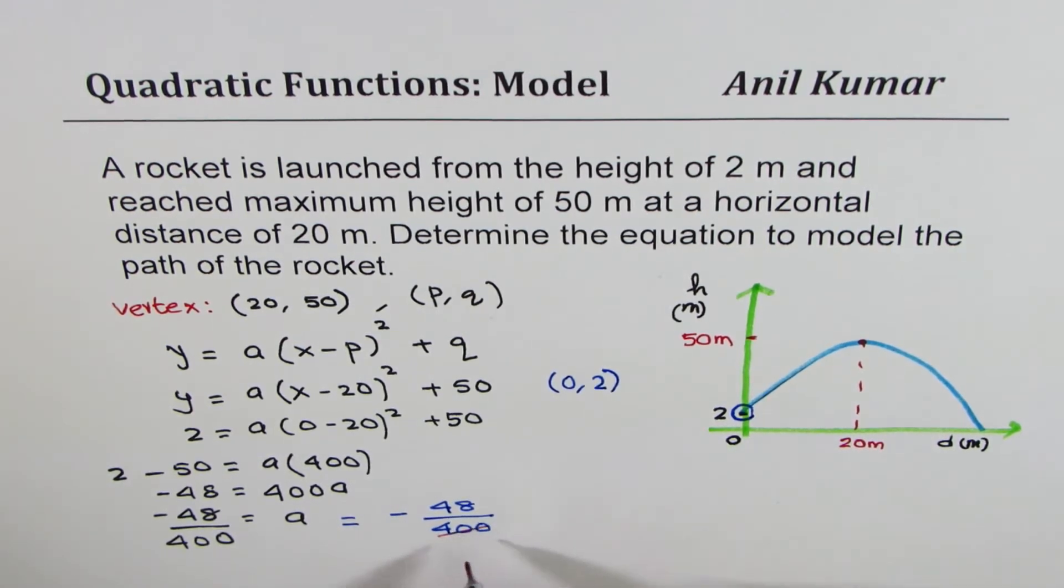Or let's simply divide it by 4 first. 4 times 12 is 48, 4 times 100 is 400. We can again divide by 4, 4 times 3 and 25. So that gives you a value of a as minus 3 over 25.